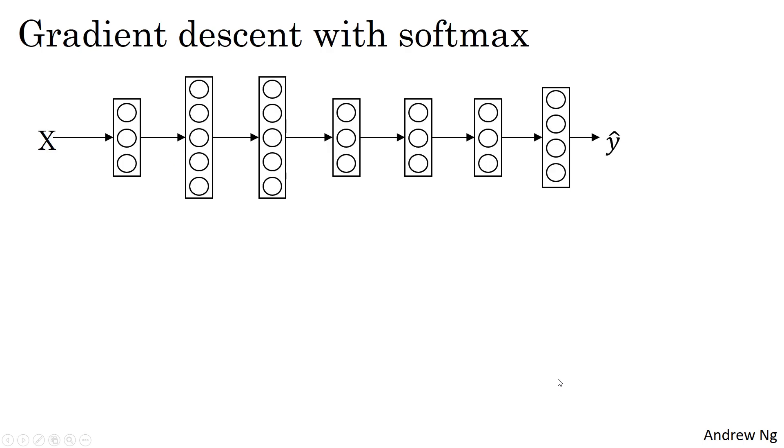Finally, let's take a look at how you'd implement gradient descent when you have a softmax output layer. So this output layer will compute ZL, which is C by 1 in our example, 4 by 1. And then you apply the softmax activation function to get AL, or y hat. And then that, in turn, allows you to compute the loss. So we've talked about how to implement the forward propagation step of the neural network to get this output and to compute that loss. How about the back propagation step or gradient descent?